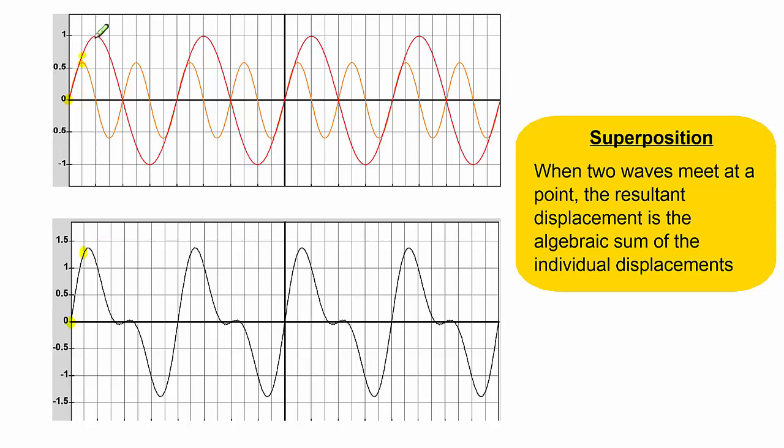Let's move one second along again and you'll see here that the red wave has a displacement of 1 and the orange wave has a displacement of 0. So therefore at this point, two seconds along, we have a resultant of 1. 1 plus 0 is 1.